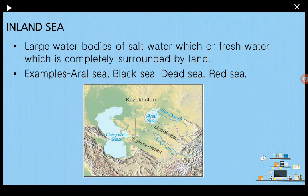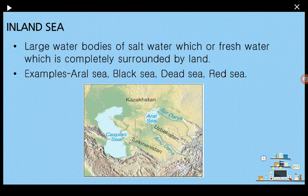Another type of sea is your inland sea. Inland seas are much more different than marginal seas. In an inland sea, the sea is surrounded by landmass on all its sides and the sea is in the middle. If you see the image of the Caspian Sea and the Aral Sea, you will find they are surrounded by landmass on almost all sides. Examples include the Aral Sea, Black Sea, Dead Sea, and Red Sea.